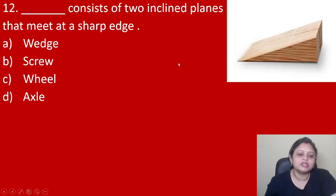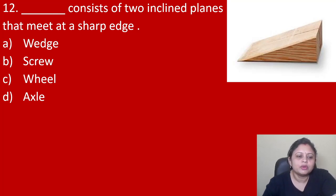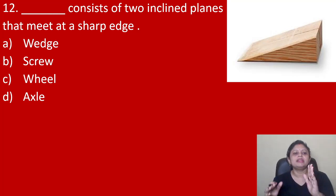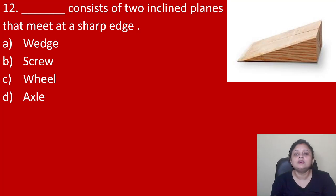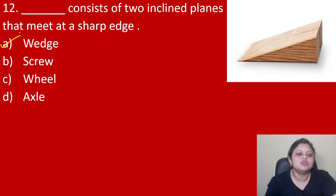Next question: dash consists of two inclined planes that meet at a sharp edge. Option A wedge, B screw, C wheel, D axle. Two inclined planes that meet at a sharp edge — that is the wedge. So the correct answer is option A, wedge. Examples are an axe and a knife.